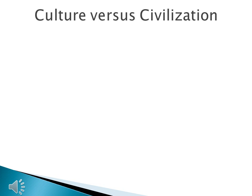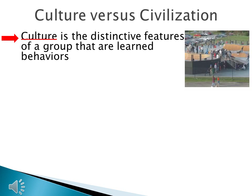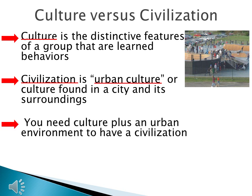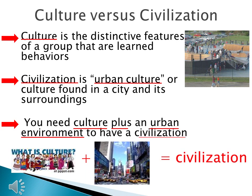Before we understand the cycle of civilization, we have to be able to define what a civilization is. To have a civilization, you need two things. The first is culture — culture is the distinctive features of a group that are learned behaviors. A good example is the skating culture; boarders talk a certain way, dress a certain way, and there's an etiquette when skating. Civilization is urban culture — culture found in a city and its surroundings. So you need culture plus an urban environment to have a civilization.